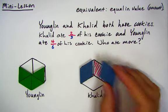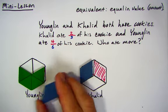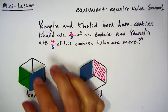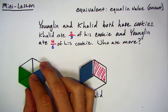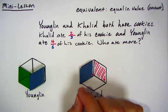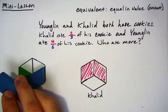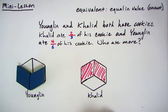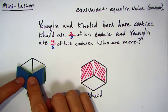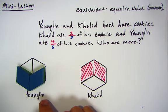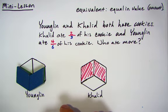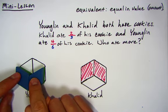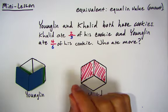Let's figure out who ate more by simply picking up the blocks and putting them on top of each other to compare them. I'm going to take one-third of what Khaled ate and put it over part of Young Lin's. This one-third covered up two-sixths of Young Lin's cookie. Let's take the other third from Khaled's cookie and put it right there. Do you see what just happened? If I can cover the amount with Khaled's amount and I don't see anything sticking out, then we can say that they're equivalent.